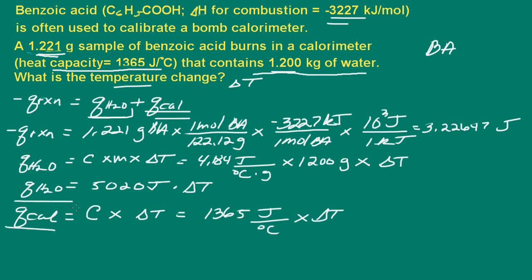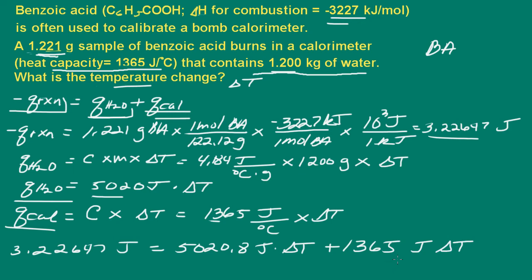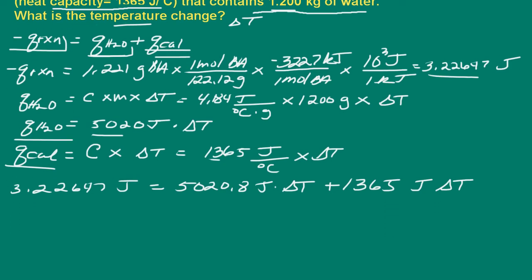We have both of these and this value here. So let's plug into this equation. We determined the heat released to be 3.22647 joules. We'll set that equal to the heat that the water absorbs, which would be 5,020.8 joules times delta T, plus the heat absorbed by the calorimeter, which would be 1,365 joules times delta T.